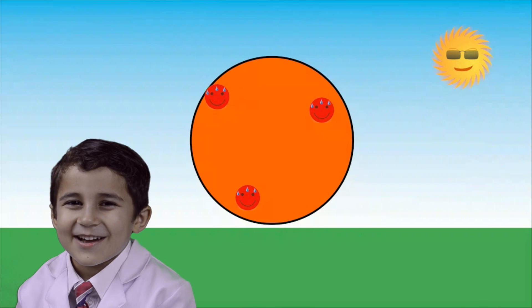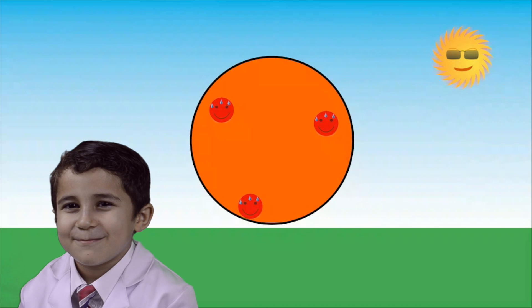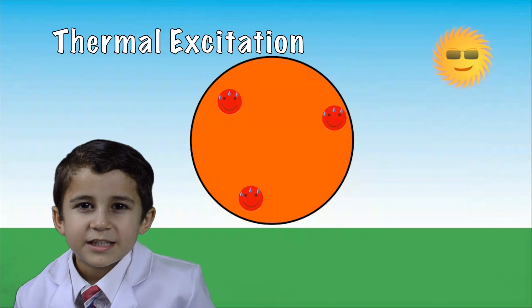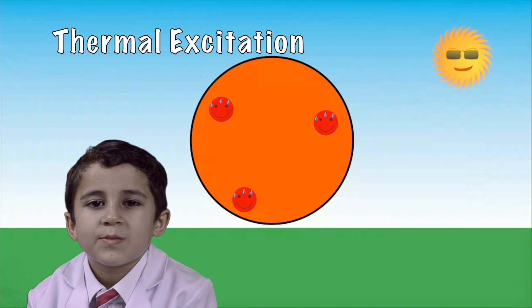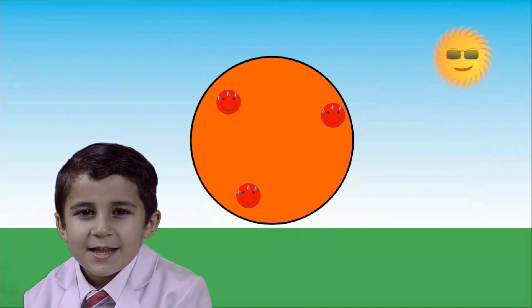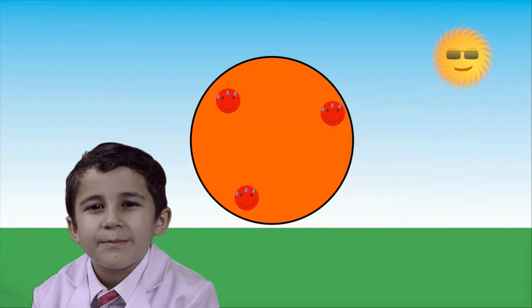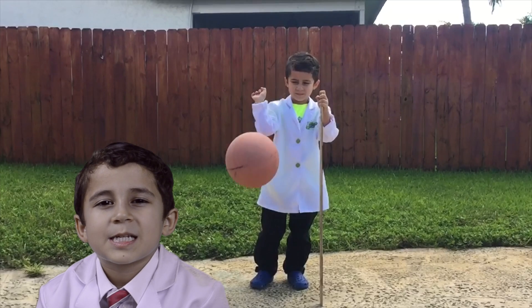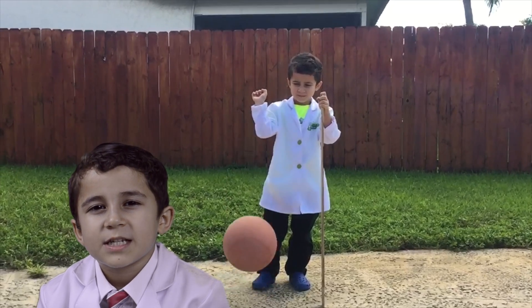When they get hot, they like to move it, move it. This is called thermal excitation. As the air particles move faster, they hit the inside walls of the basketball with more force. That increases the pressure of the ball and it bounces higher.